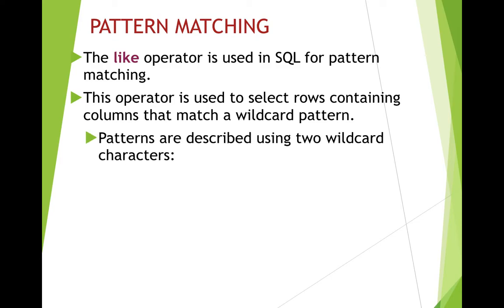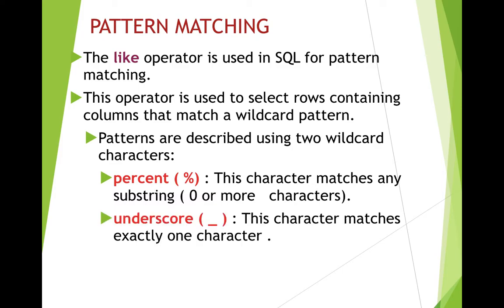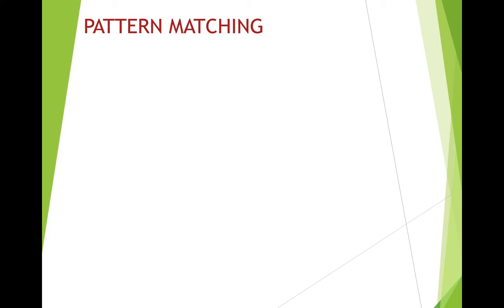Patterns are described using two wildcard characters. First is the percentage symbol (%), which matches any substring of zero or more characters. Second is the underscore character (_), which matches exactly one character — so one underscore must match one and only one character.